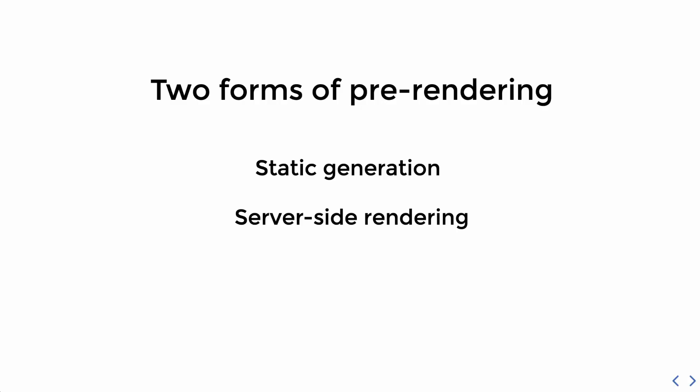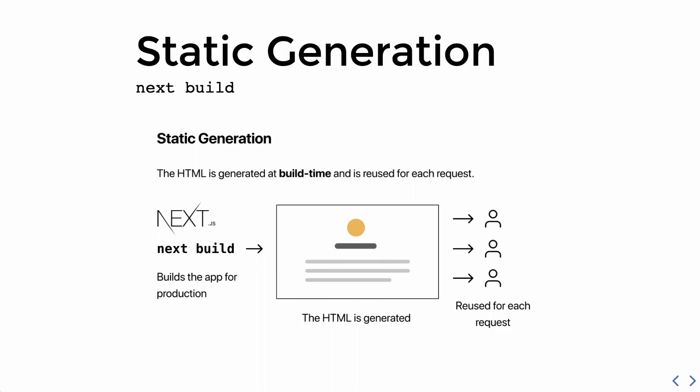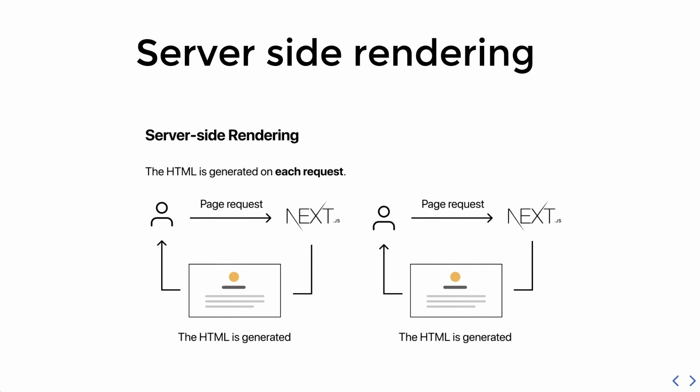Next.js can pre-render pages in two different ways: static generation or server-side rendering. The difference between them is when the HTML for the page is generated. With static generation, the HTML is generated at build time — meaning when you run 'next build' — and that pre-rendered HTML is then reused on each request. With server-side rendering, the HTML is generated on each request, so whenever a user makes a request for the page, the server generates the HTML for that page.